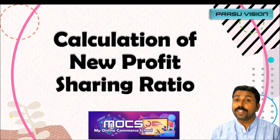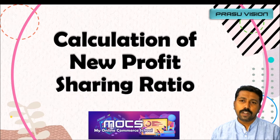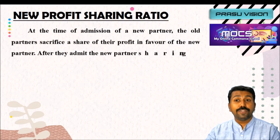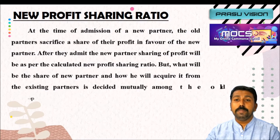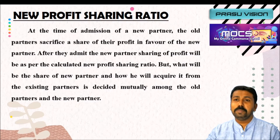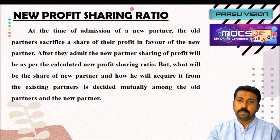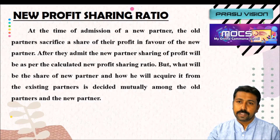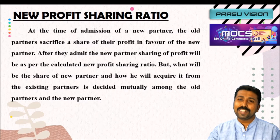We are going to learn how to calculate the new profit sharing ratio, and we need to remember why it is needed. When the partnership firm is reconstituted at the time of admitting a new partner, the existing ratio is changed because the newly admitted partner has to share profit along with the old partners. In the partnership deed, there will be a change in the new profit sharing ratio, and we have to calculate it through different cases.